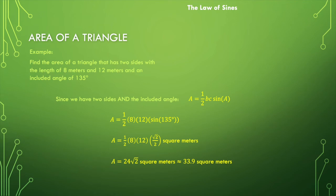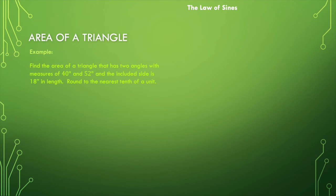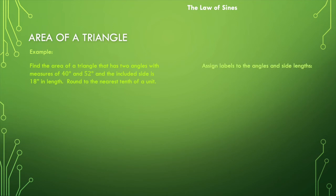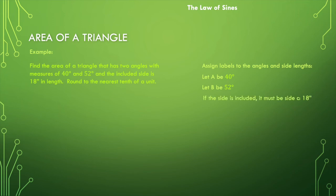Here's one more example. Find the area of a triangle that has two angles measuring 40 degrees and 52 degrees, and the included side is 18 inches. Round to the nearest tenth. This gives us different information — not exactly what we need for the formula directly. Let's assign labels: angle A is 40 degrees, angle B is 52 degrees, and the included side between them is side c, which is 18 inches.